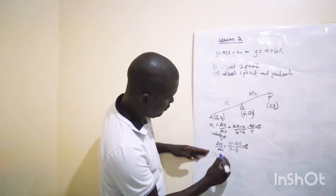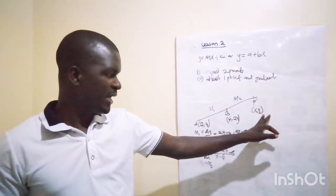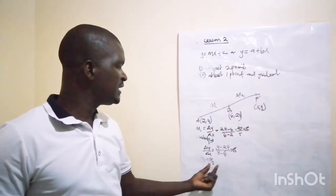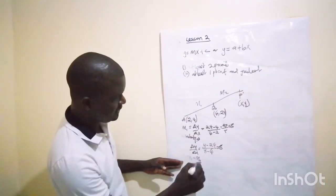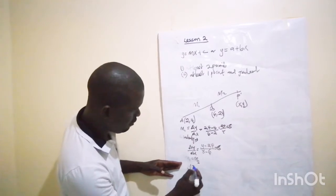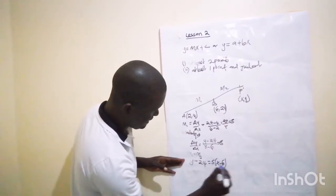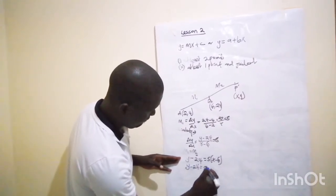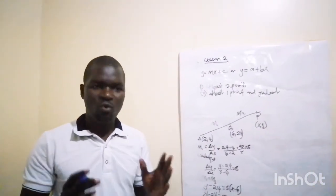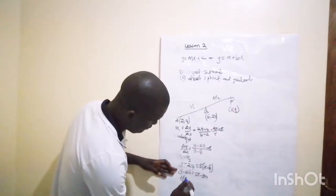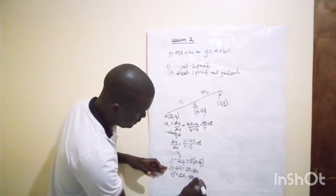Since m1 equals m2 at any given point, the change in y over change in x for point P will always equal the change in coordinates of B relative to A. So we write: y - 24 = 5 times (x - 6), which expands to y - 24 = 5x - 30.